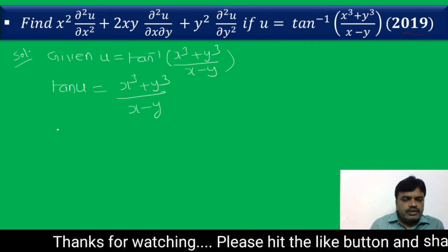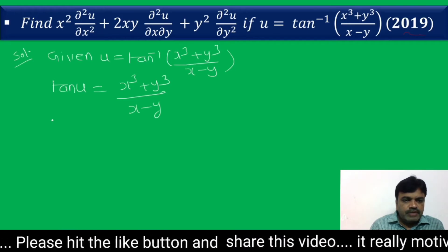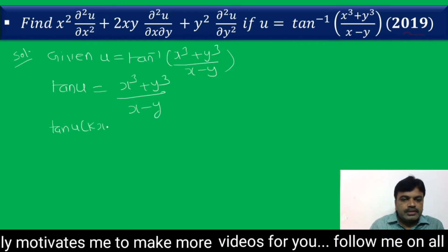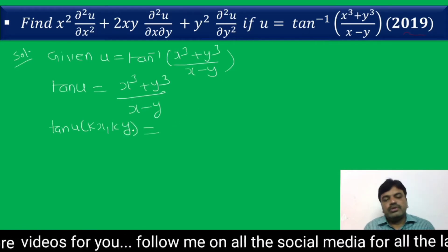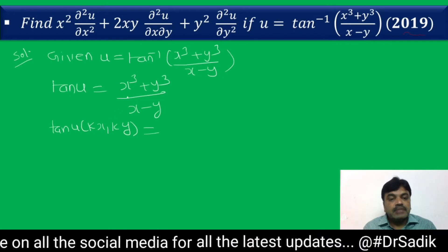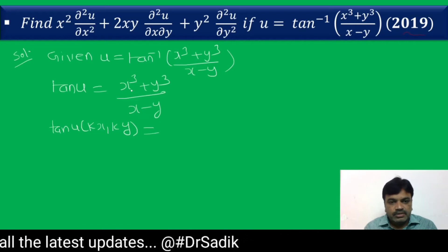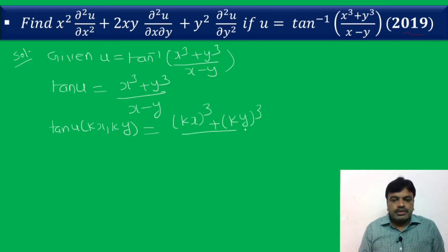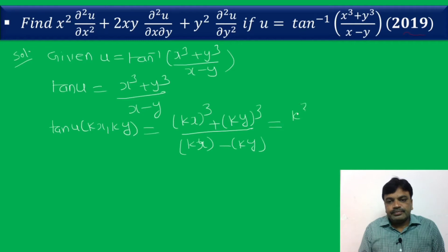For checking the homogeneous function, I take tan u as a function of (kx, ky). That means we write kx in place of x and ky in place of y. We get (kx)³ + (ky)³ divided by (kx − ky). Taking k³ common from the numerator gives k³(x³ + y³), and taking k common from the denominator gives k(x − y). So k³ divided by k is k², a common factor of 2.